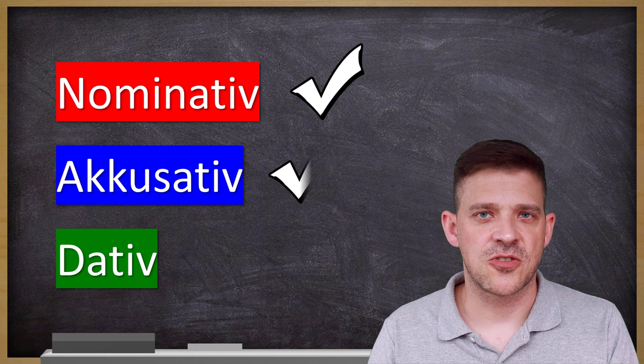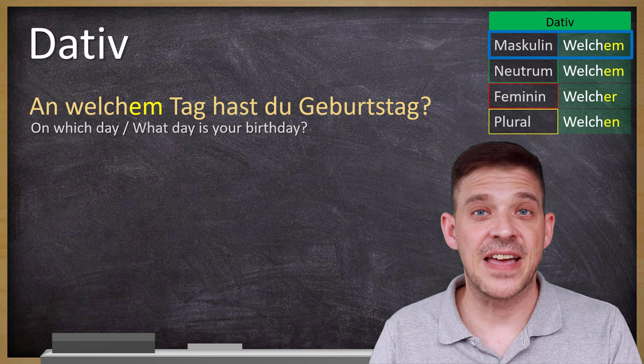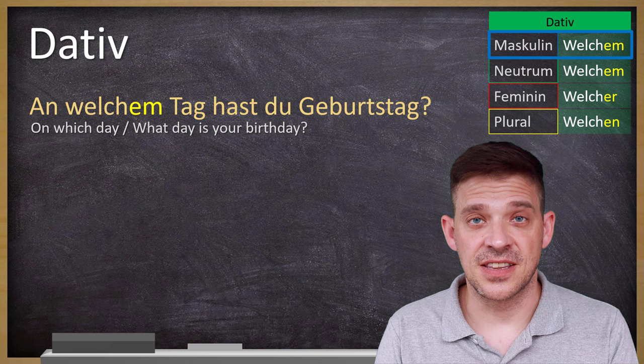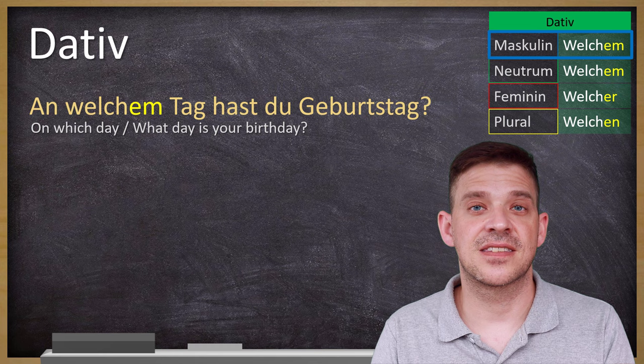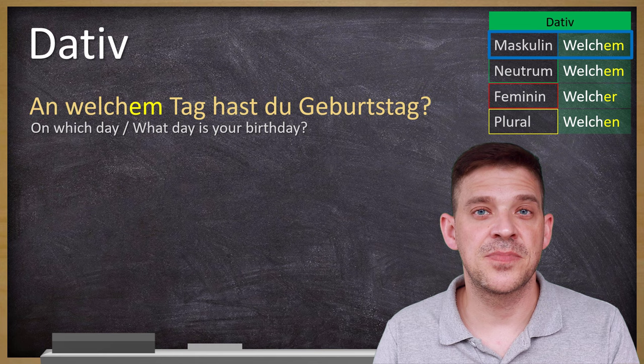Let's go to Dativ, starting with an example in Maskulin: An welchem Tag hast du Geburtstag? — On which day is your birthday? Here a preposition is added, which is of course also possible. The preposition an takes Dativ, and because Tag is a masculine noun, you use the ending -EM: An welchem Tag hast du Geburtstag?